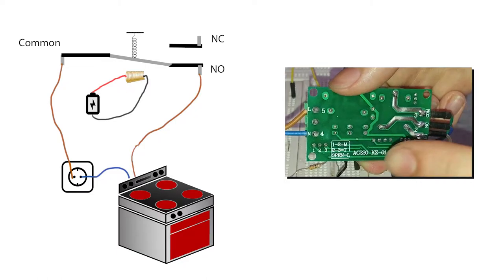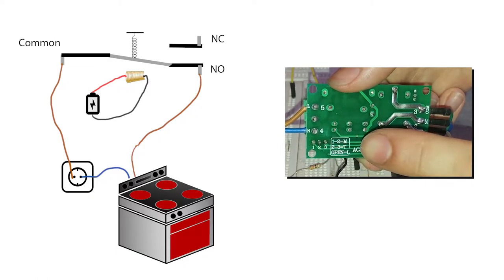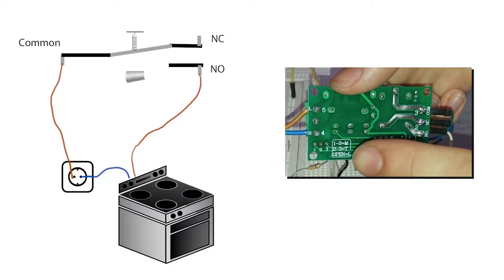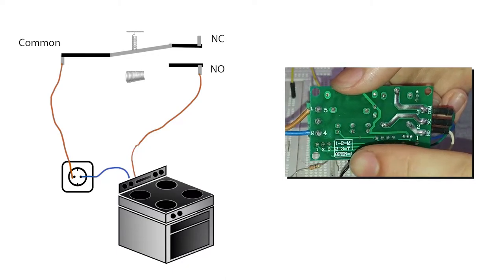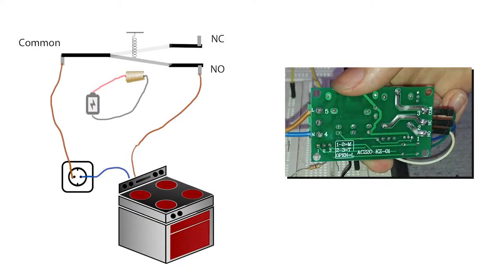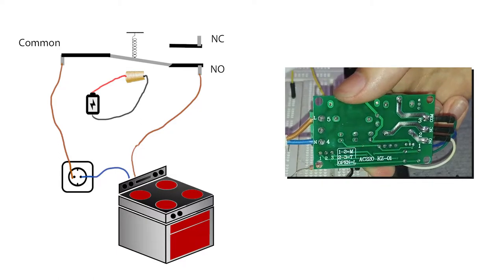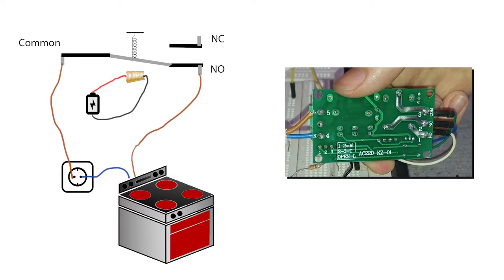In simple terms the common contact is moved by an electromagnet. When there's no power going to it the common connects to the NC contact. When there's current flowing through its coil the common connects to the NO contact.